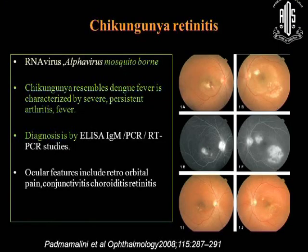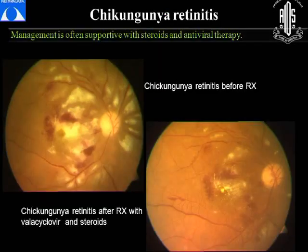Chikungunya is a mosquito-borne RNA alphavirus, and chikungunya fever resembles dengue but is associated with arthritis and fever. Diagnosis is with ELISA IgM, PCR, or RT-PCR. Ocular features include retroorbital pain, conjunctivitis, choroiditis, or retinitis. These are pictures of chikungunya retinitis seen at our hospital; treatment was supportive and we did add antivirals to the therapy.